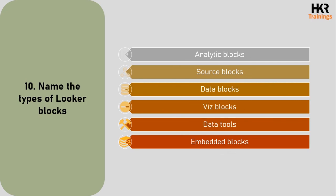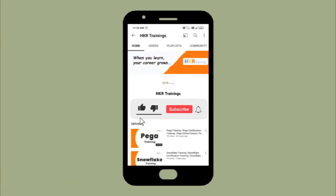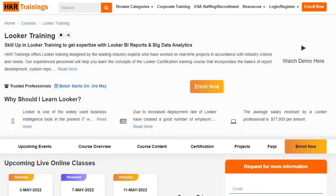The last question: name the types of Looker Blocks. There are six types: the first is Analytic Blocks, the second is Source Blocks, the third is Data Blogs, the fourth is Viz Blogs, the fifth is Data Tools, and the last is Embedded Blocks. With this we come to the end of today's session. If you like this video, do not forget to subscribe to our channel, hit the like button, and visit our website for more information about HKR Training sessions.